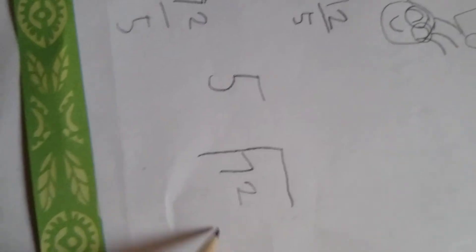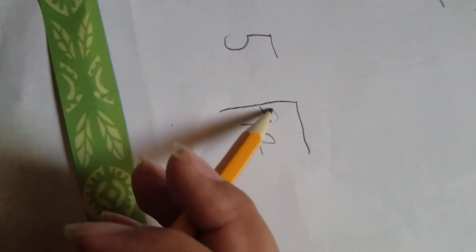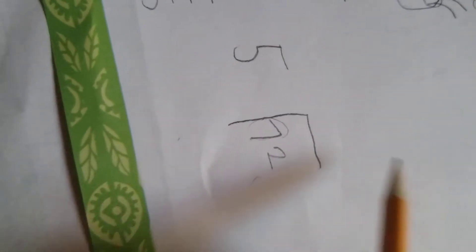You cannot leave the answer like that, so you have to divide it. There are two ways to divide it, but I'm gonna do the way that I know. Five, okay, you can get seven out of five.